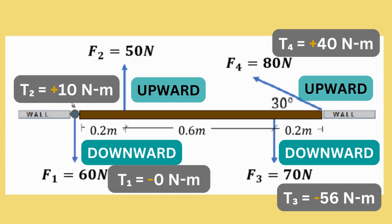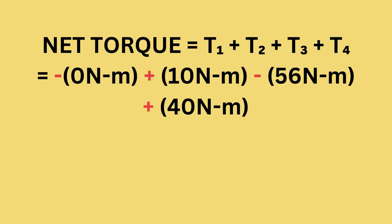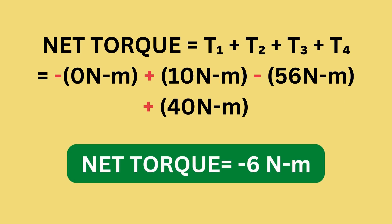Because F1 is downward, T1 is negative. T2 is positive, T3 is negative, and T4 is positive, all signs according to the direction of the forces. Now we can write the final equation. Net torque equals negative 0 newton meter plus 10 newton meters minus 56 newton meters plus 40 newton meters. This will give us a net torque of negative 6 newton meters.